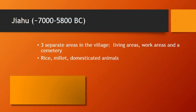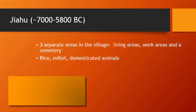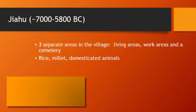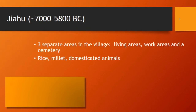Let's start looking at Jiahu. The dates here are around 7000 to about 6000 BC. It's an interesting Neolithic village because what you find are three separate living areas: where their houses were, where they seem to go off and do work like making pottery, and a place for the dead to be buried — a cemetery.